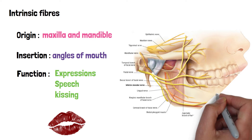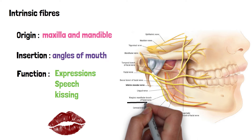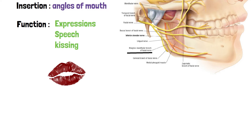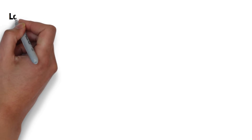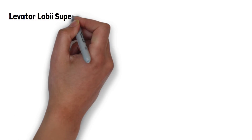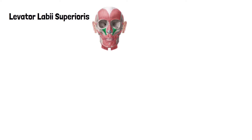Unlike extrinsic fibers, the intrinsic fibers are innervated by the marginal and mandibular branch of the facial nerve. There are a few other facial muscles that control lip movements. First is the levator labii superioris — this muscle, as the name indicates, elevates the lip.